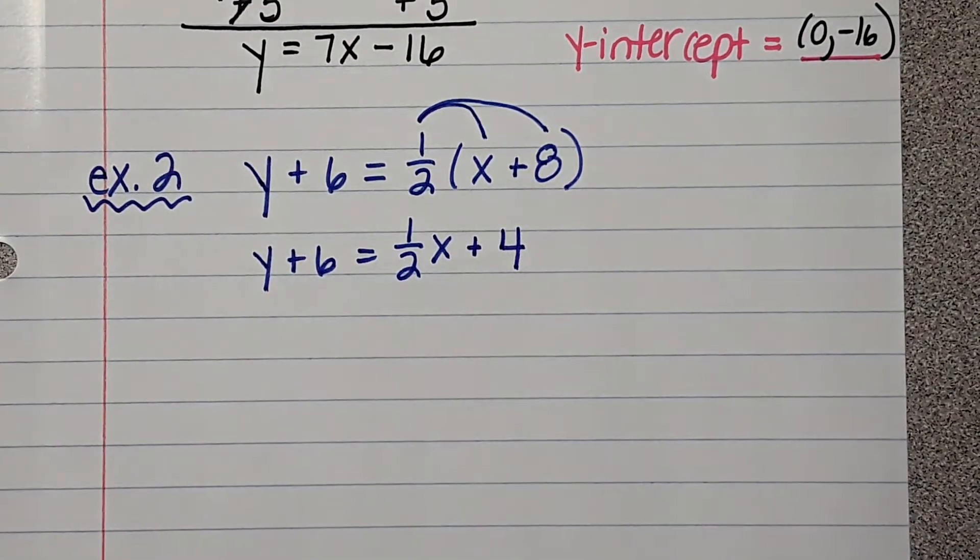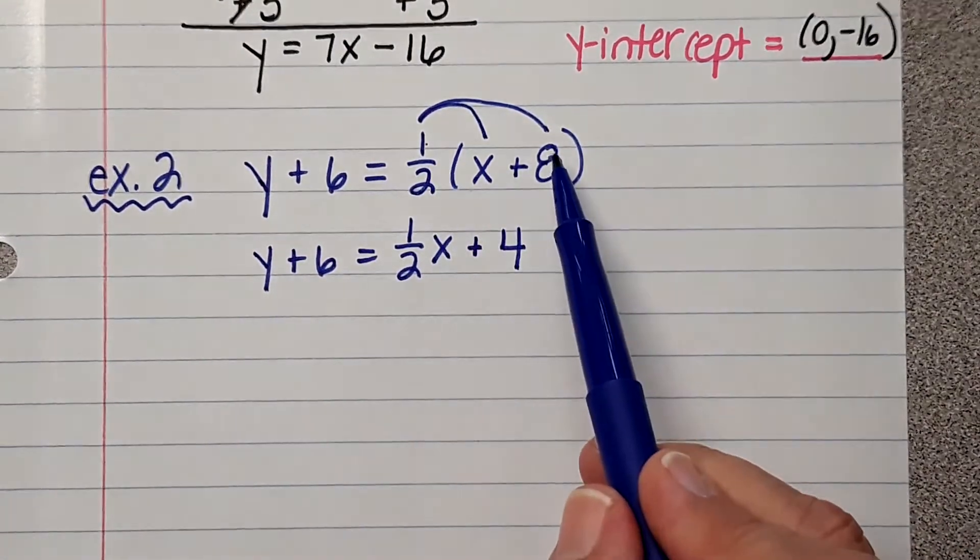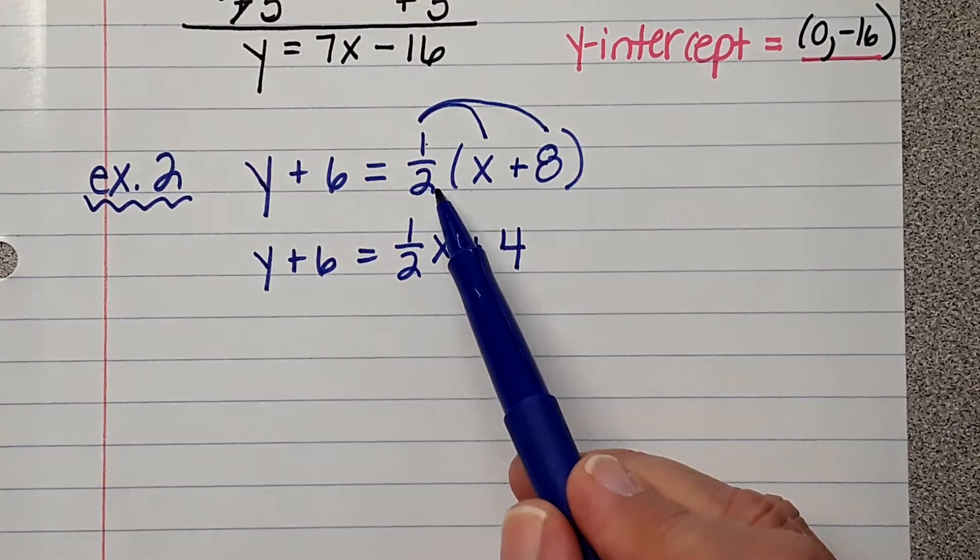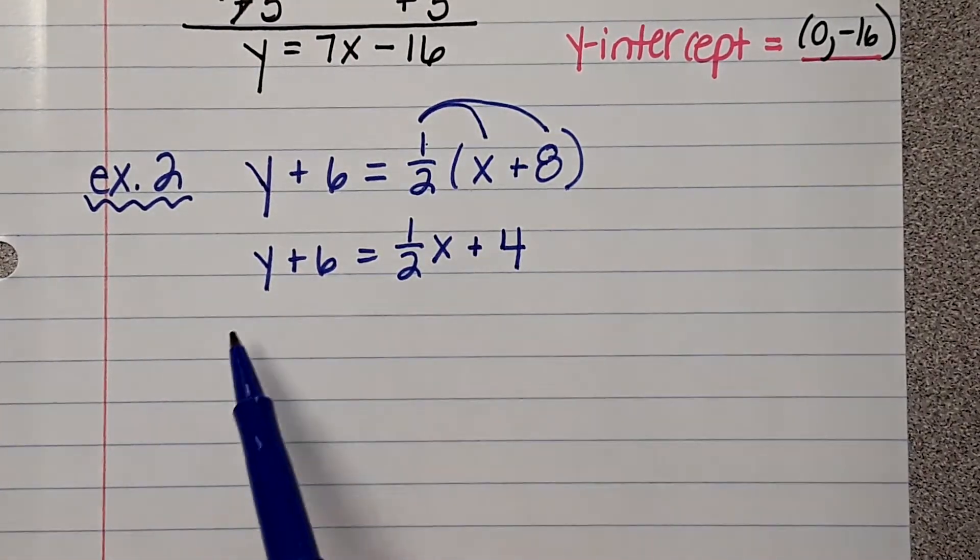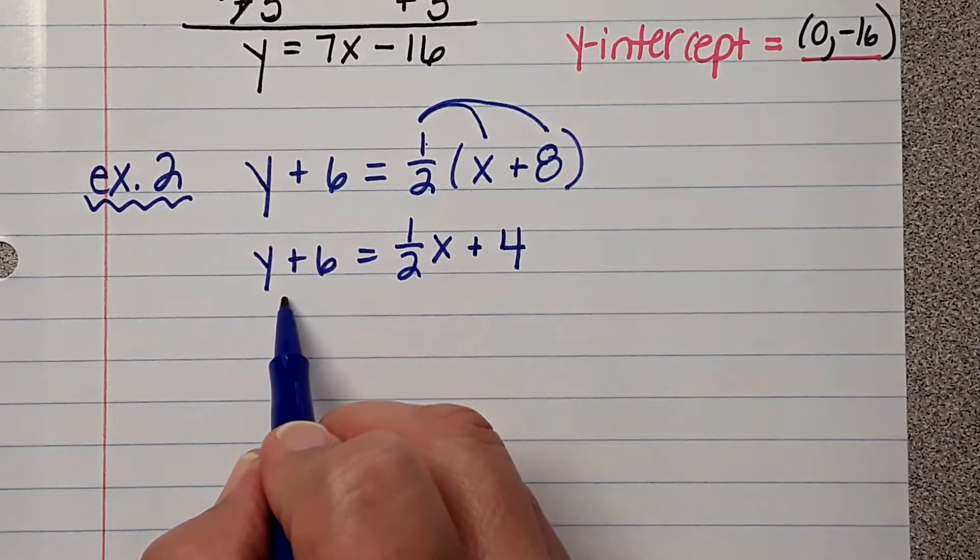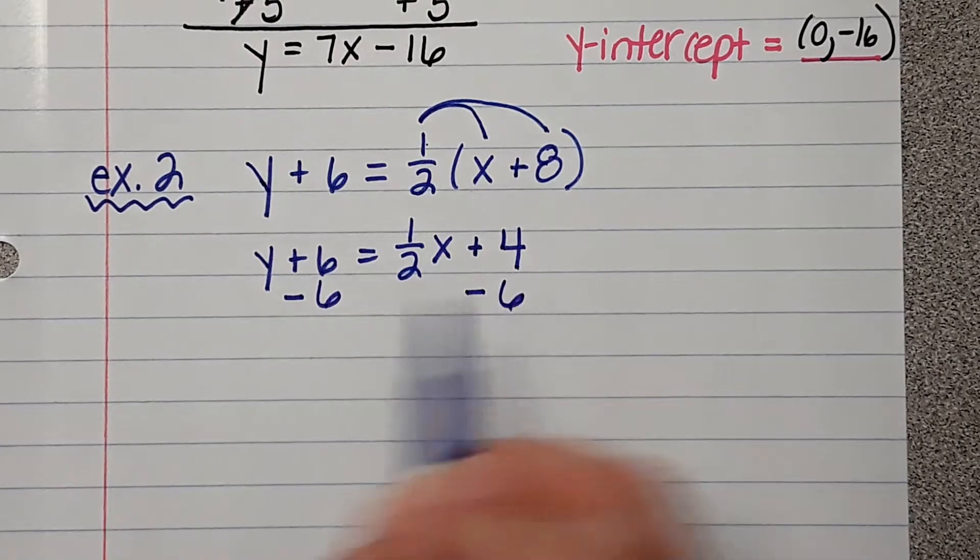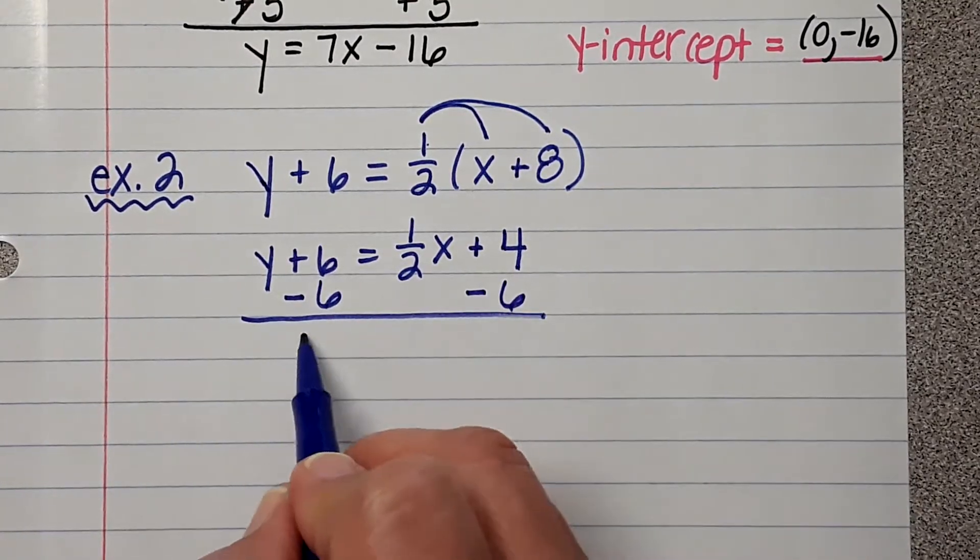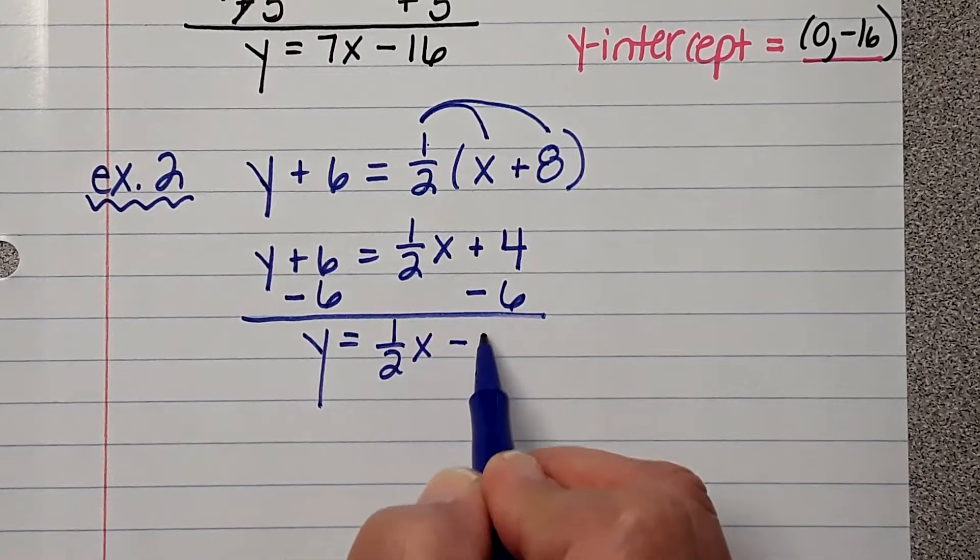Because basically, you're doing 1 times 8, which is 8, and then dividing by 2. Now, we can't leave the 6 on the side of the Y. So, we're going to subtract 6. Since it's positive, we're going to subtract it from both sides. And Y equals 1 half X minus 2.